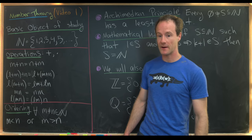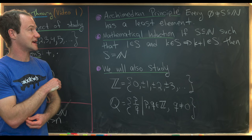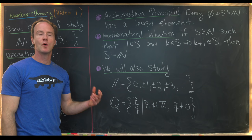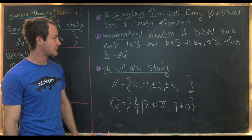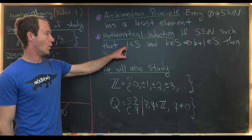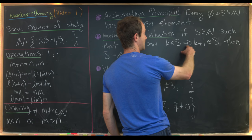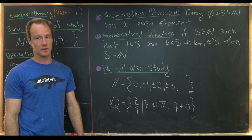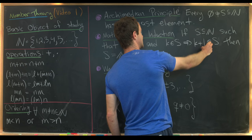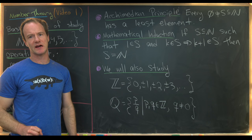Another couple of things that we'll take as fact are the Archimedean principle — that says if we have a non-empty set of natural numbers it must have a least element. Also, as needed, we'll use the principle of mathematical induction. If we've got a set S of natural numbers satisfying two conditions: one is an element of S, and if k is an element of S that implies k plus one is an element of S, then S is in fact all the natural numbers. You can think of one being in S as the base case, k being in S as the induction hypothesis, and S being all natural numbers as a formula holding for all natural numbers.